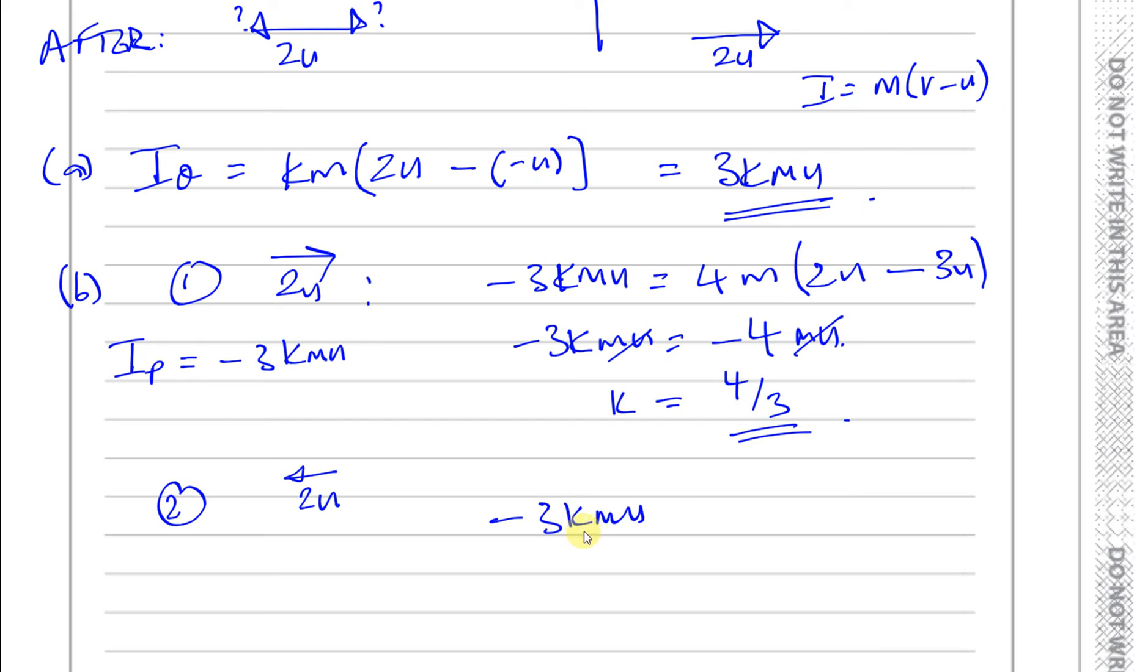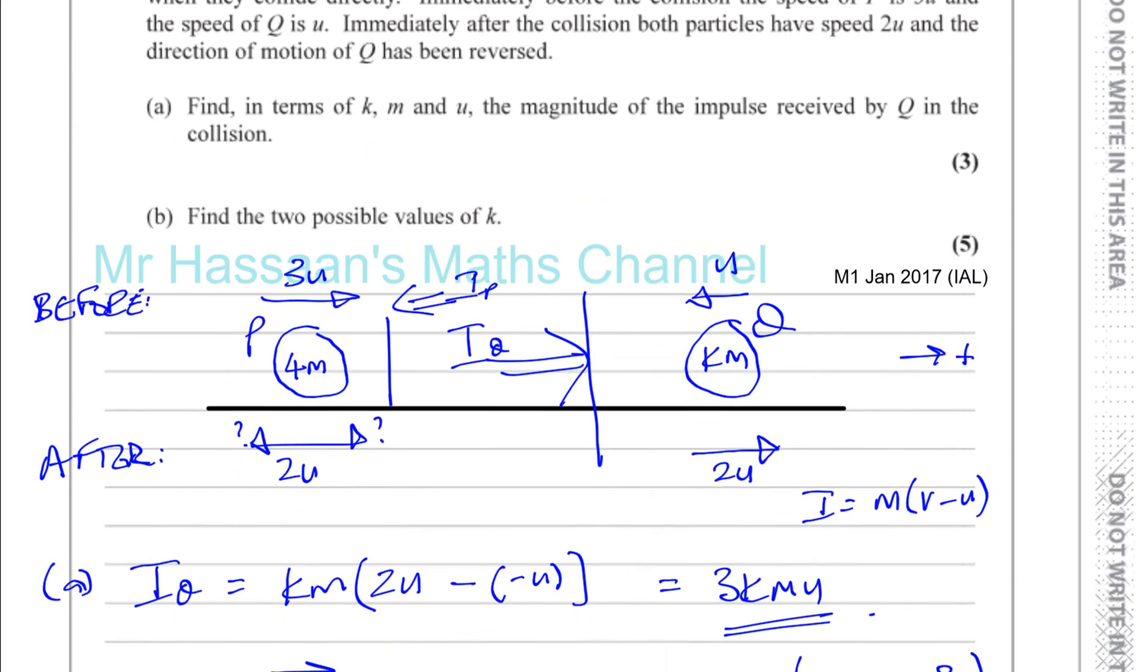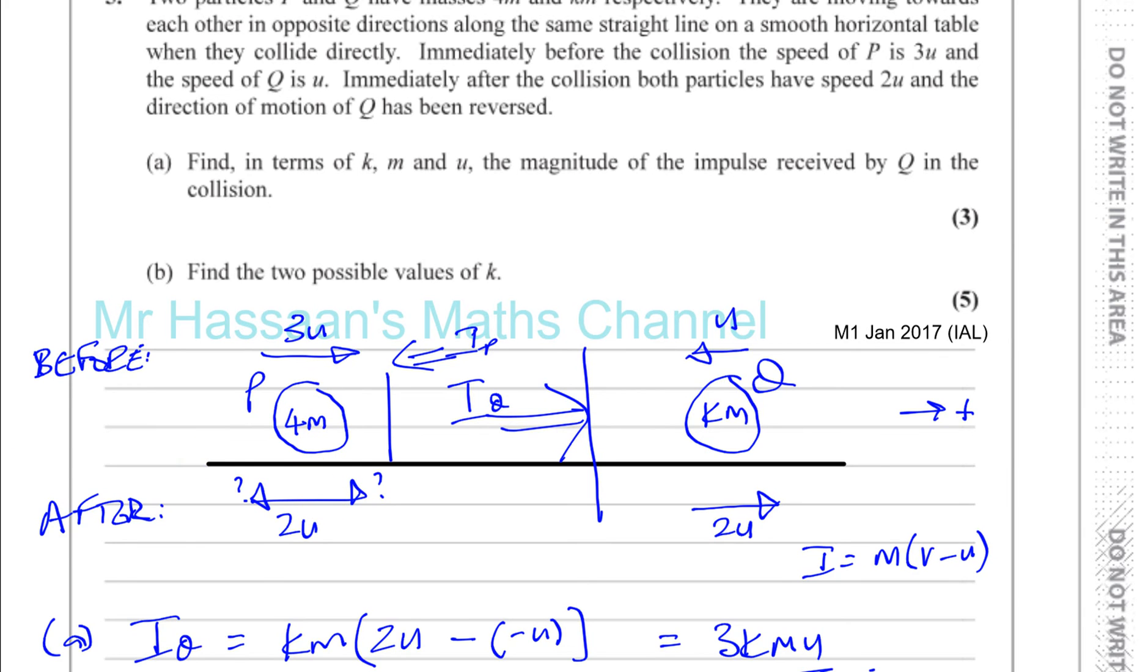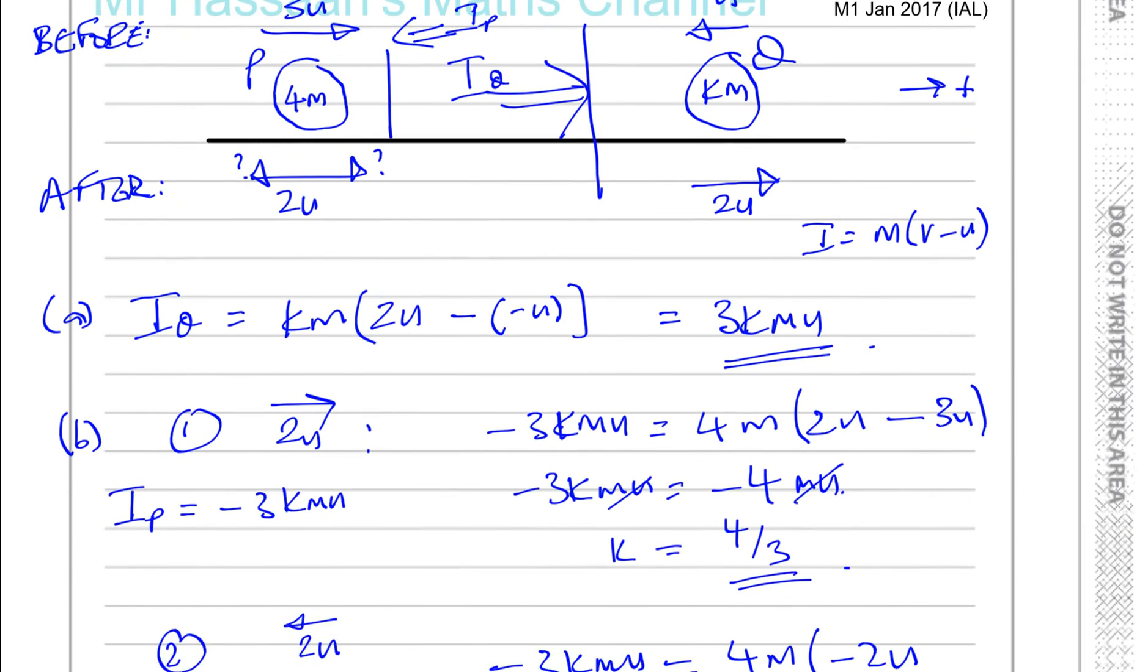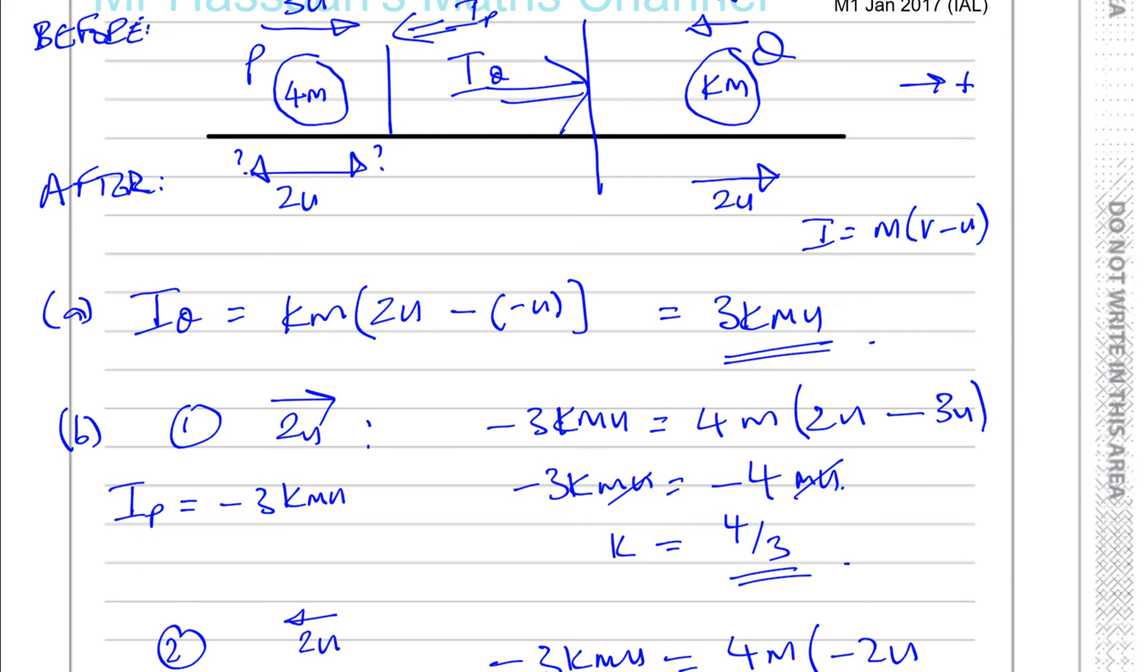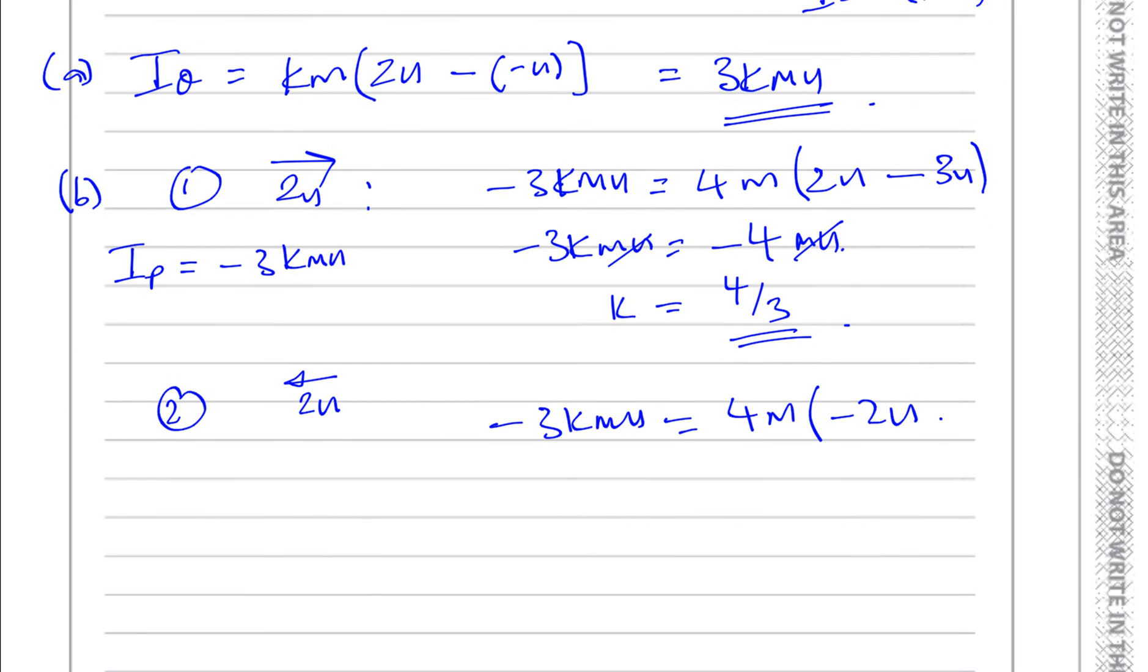Minus 3KMU is equal to its mass times its change in velocity. This time, the velocity after is minus 2U, because it's changed direction. It's going to the left now. And you've got minus the velocity before, which is 3U. So you've got 2U minus 3U, that's minus 5U.